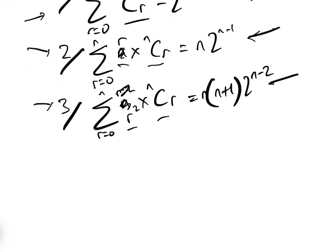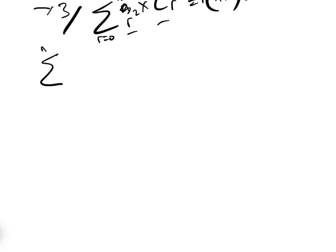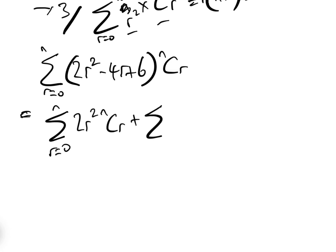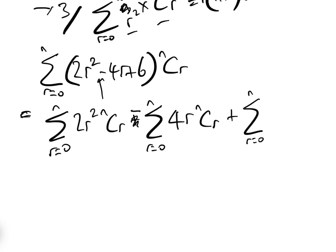So let's do an example. The sum between R equals zero and N of two R squared minus four R plus six times NCR. We split this into three sums: the sum of two R squared NCR, minus the sum of four R NCR, plus the sum of six NCR, all between R equals zero and N.